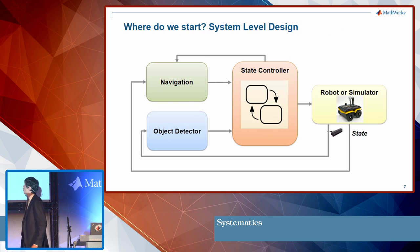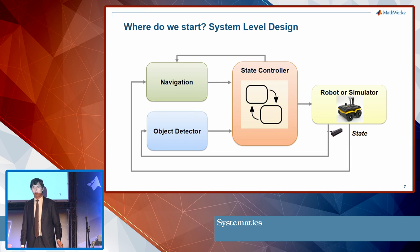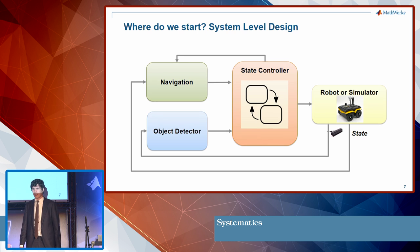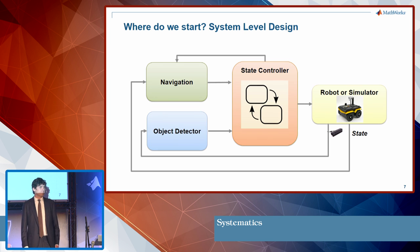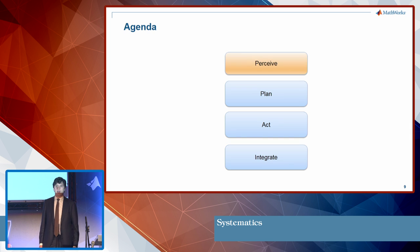Let's start with our workflow. First, I want to show you the system-level design. We take a pen and paper and draw a system-level design showing the different aspects required to make everything work together — we need a navigation algorithm, an object detector, a state controller, and we need to connect these functions with our robot or simulator.